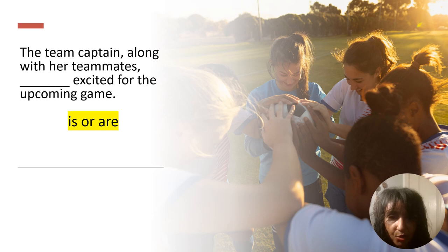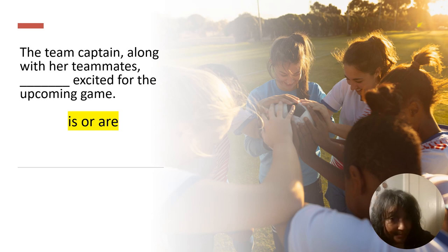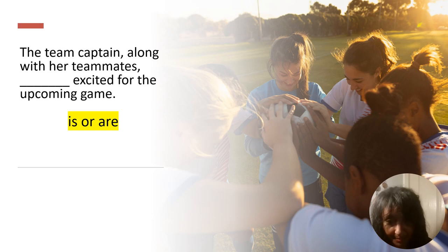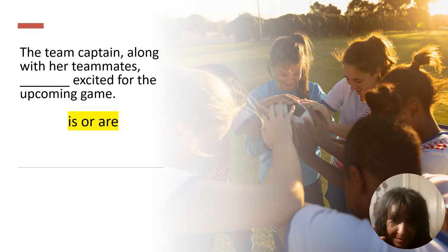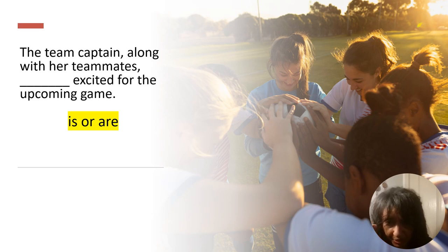'The team captain, along with her teammates, ___ excited for the upcoming game' — 'is excited' or 'are excited'? Now, this one might be a little tricky. Do you notice that there are commas that break the subject into two parts: 'the team captain' and 'along with her teammates'? When we're looking at the verb, we focus on the first part of the subject: 'the team captain.' So it's 'The team captain, along with her teammates, is excited for the upcoming game.'